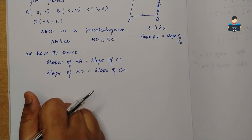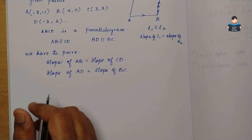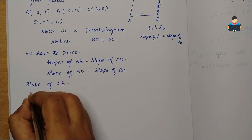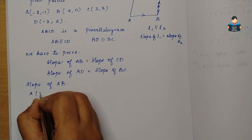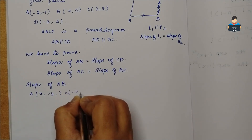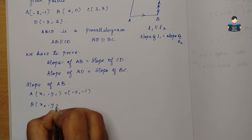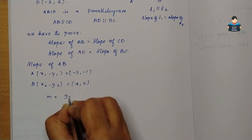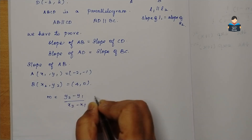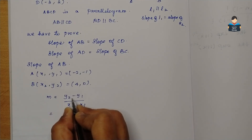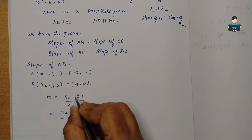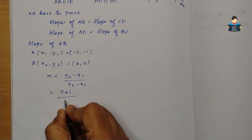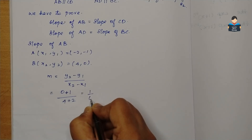To prove this, now slope of AB. The slope formula is y2 minus y1 by x2 minus x1. So now slope of AB: A is x1, y1 that is minus 2, minus 1, and B is x2, y2 that is 4, 0. Substituting: y2 minus y1 is 0 minus of minus 1 which is plus 1, and x2 minus x1 is 4 plus 2. So slope of AB is 1 by 6.